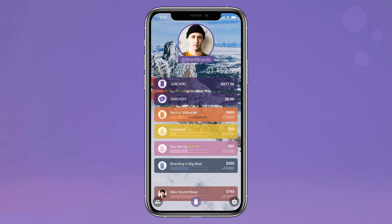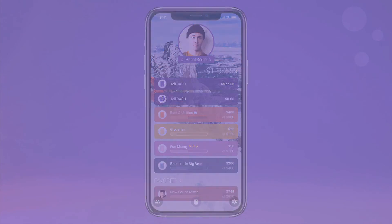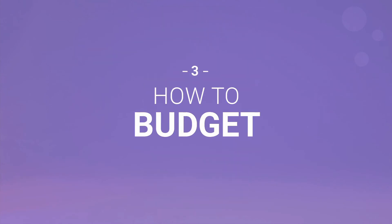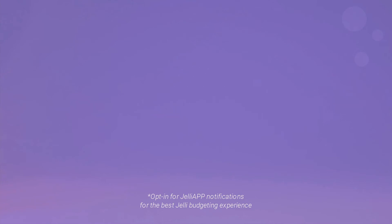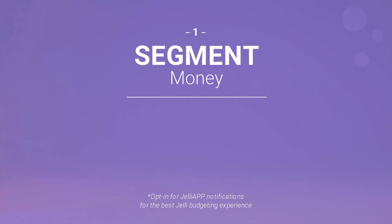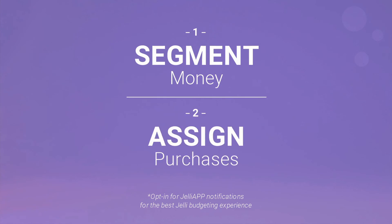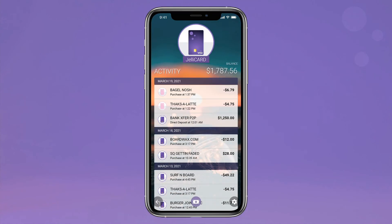You've got your jars set up, you've built your network, but now it's time to get to the meat of the Jelly app — budgeting. Budgeting with Jelly can be broken down into two simple concepts: segmenting your money and assigning your purchases. But this isn't some hard-to-use retroactive software. Jelly is real-time proactive budgeting.